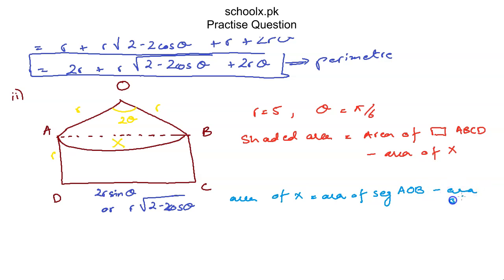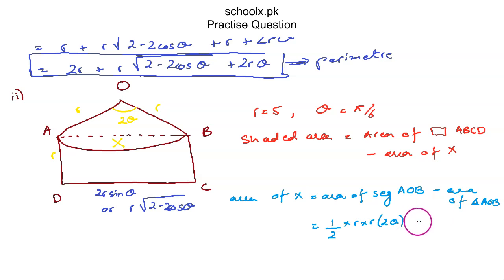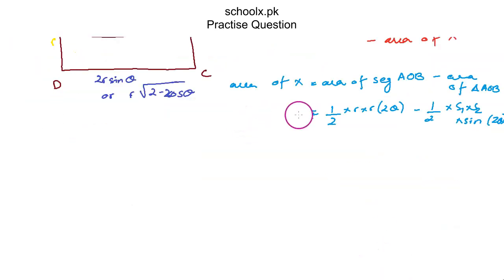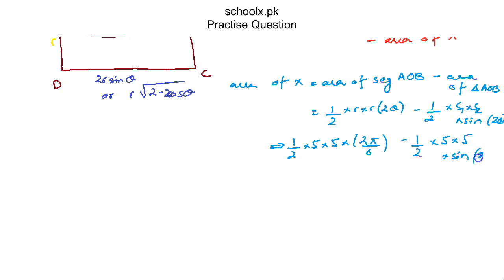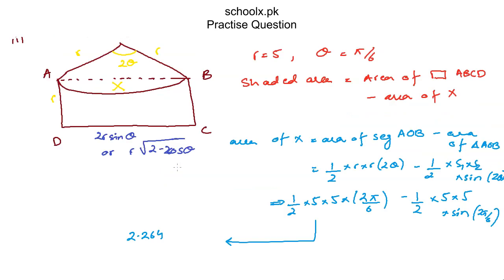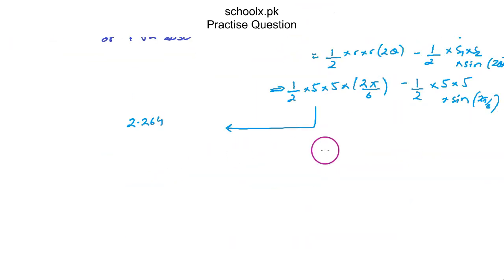Finding the area of region X: area of sector AOB = ½R²·(2θ) = ½ × 5 × 5 × 2 × (5π/6). Area of triangle AOB = ½ × R × R × sin(2θ) = ½ × 5 × 5 × sin(2 × 5π/6). Computing this gives area of region X ≈ 2.264.